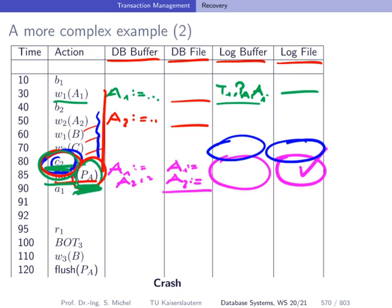It is important to note in these examples when, by the Write-Ahead Log principle and the commit rule, we have to make changes to the persistent database or more precisely to the persistent log file — specifically when a change happens to the database file.